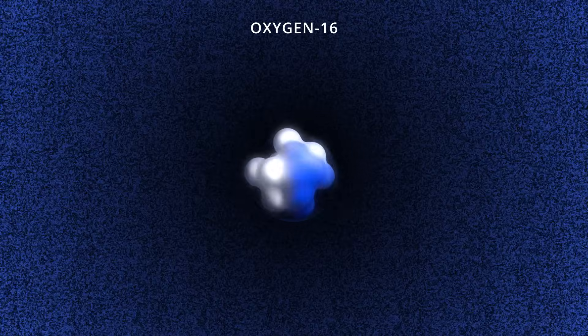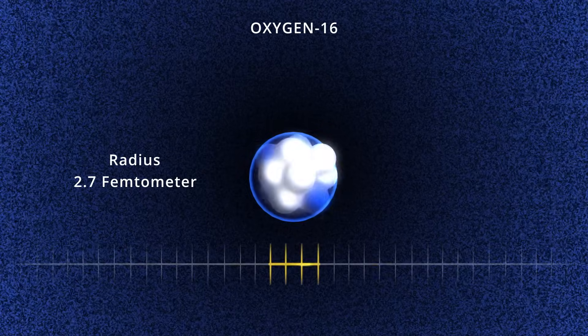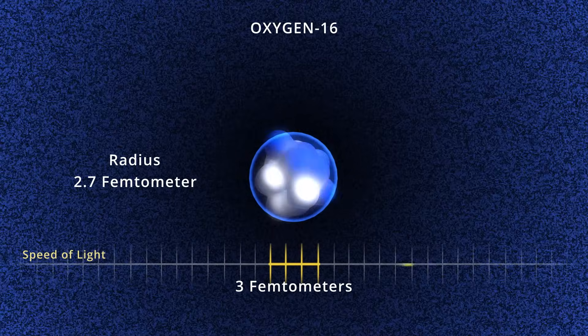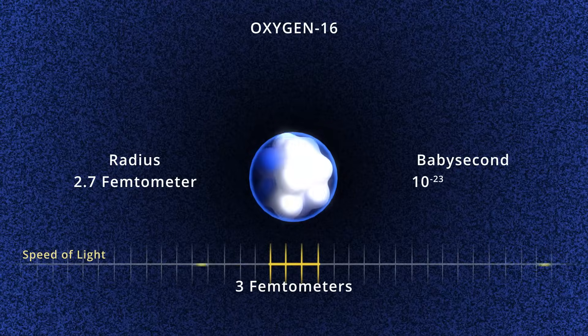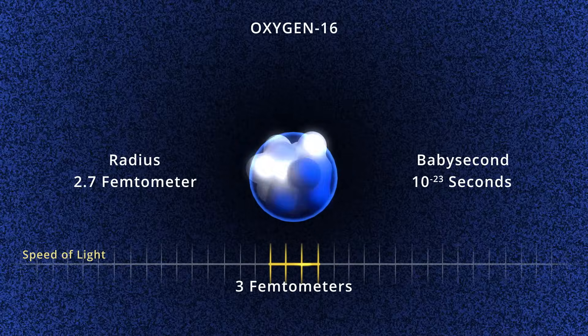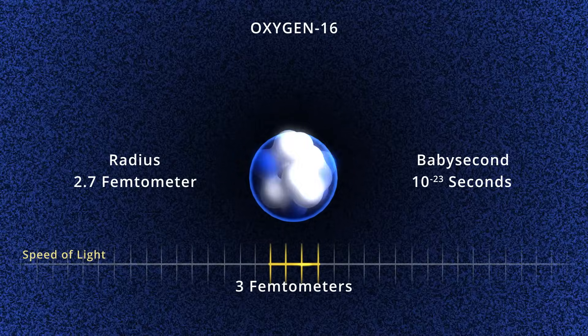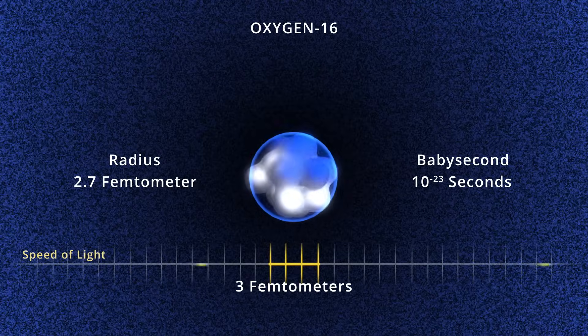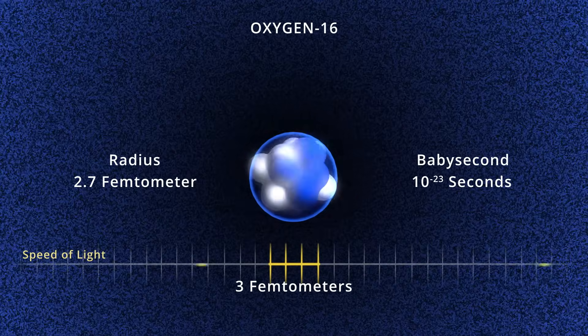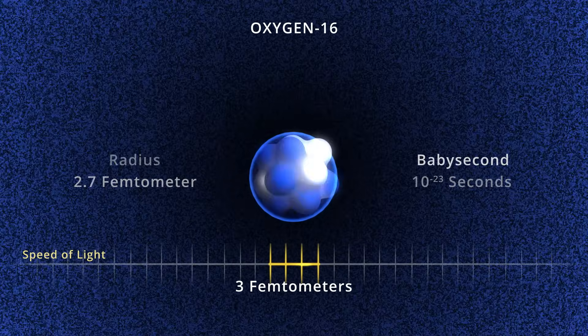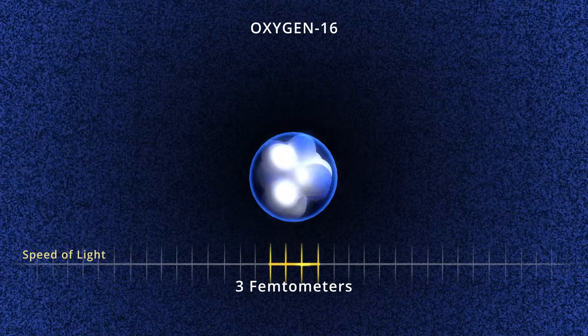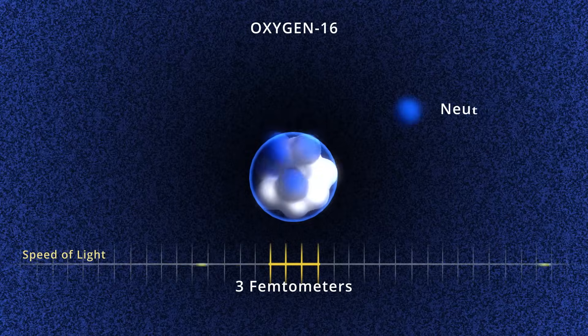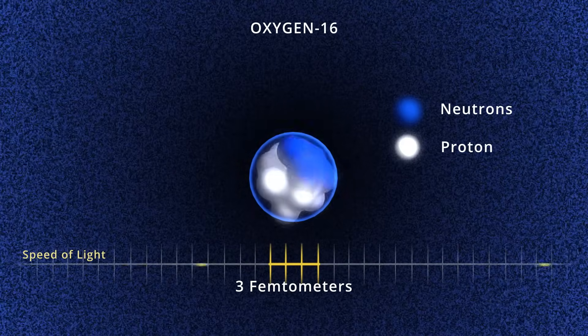Oxygen-16 has a charge radius of 2.7 femtometers. To better define the velocities of particles at such small distance scales, we establish the baby second as 10 to the negative 23rd seconds. A photon moving at the speed of light crosses 3 femtometers, a bit more than the radius of oxygen-16, in one baby second. In this animation of the nucleus, the protons and neutrons are randomly distributed and contained within a radius limiting their motions. The neutrons are distinguishable by their blue tones.